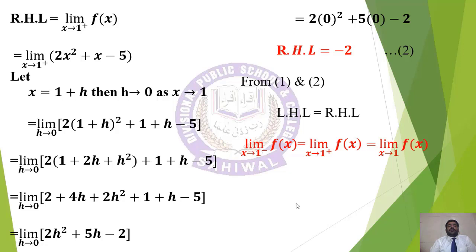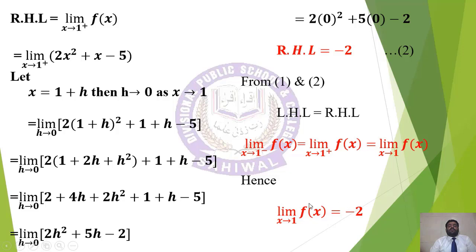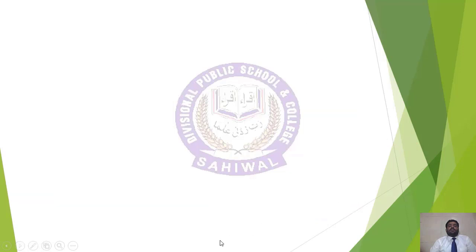That was the first part of this question. We write the required answer: limit x→1 f(x) = −2. Now we will solve another question of the same type.